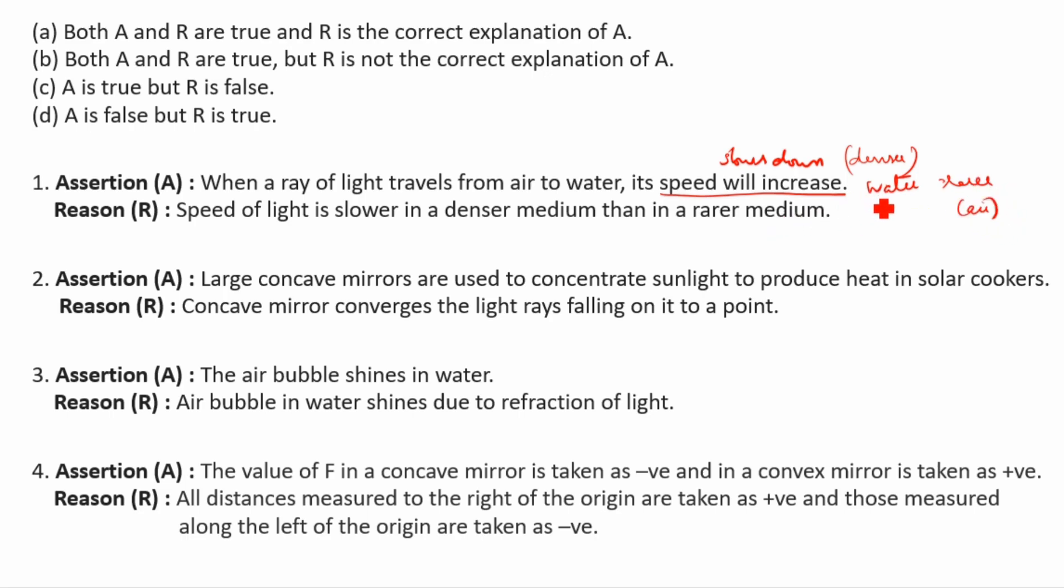Because we know that the velocity is slower in a denser medium to rarer medium, so this is wrong. Second one is reason: Speed of light is slower in a denser medium than in a rarer medium. Yes, slower only, so this is correct. So first one is wrong, second one is correct. A is false but R is true, so D is the answer.